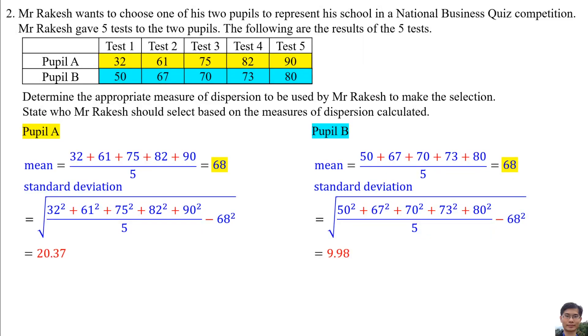So the appropriate measure of dispersion to be used by Mr. Rakesh to make the selection is the standard deviation. Pupil B should be selected. Both Pupil A and Pupil B have the same mean, though the only difference is the standard deviation. The standard deviation of Pupil B is lower because his achievement is more consistent.